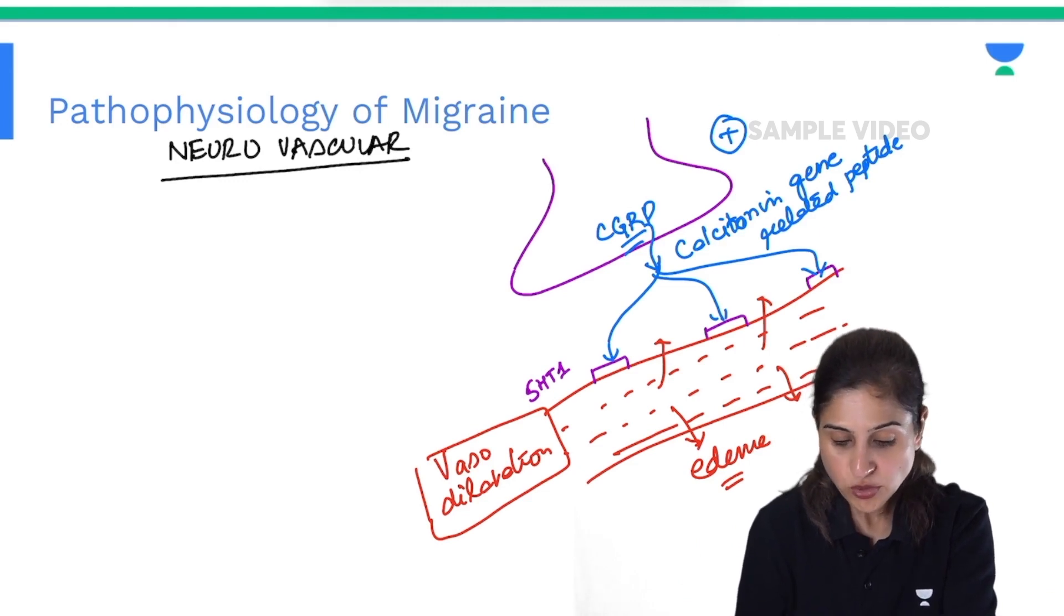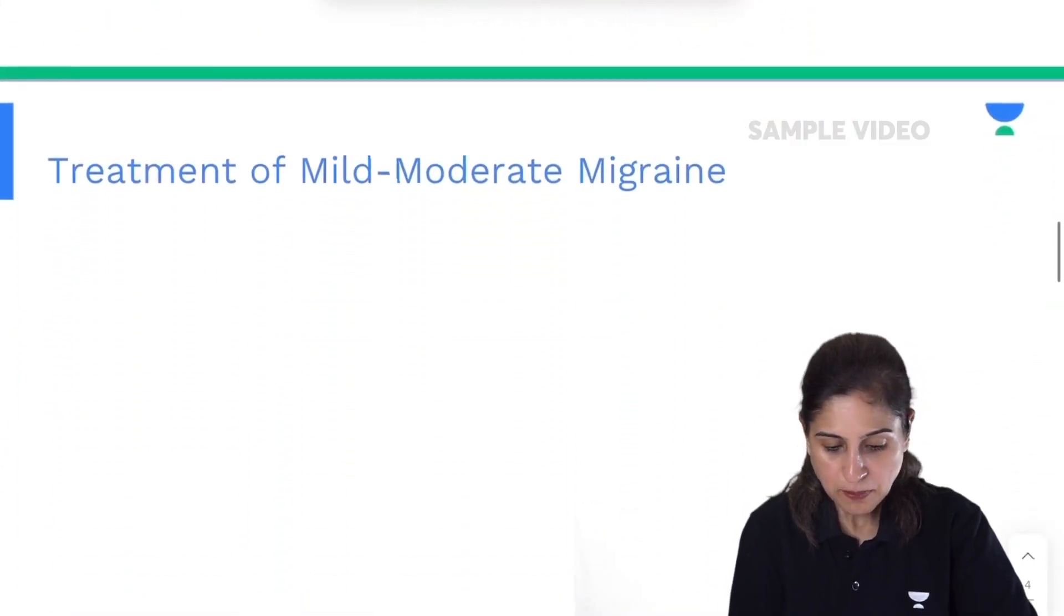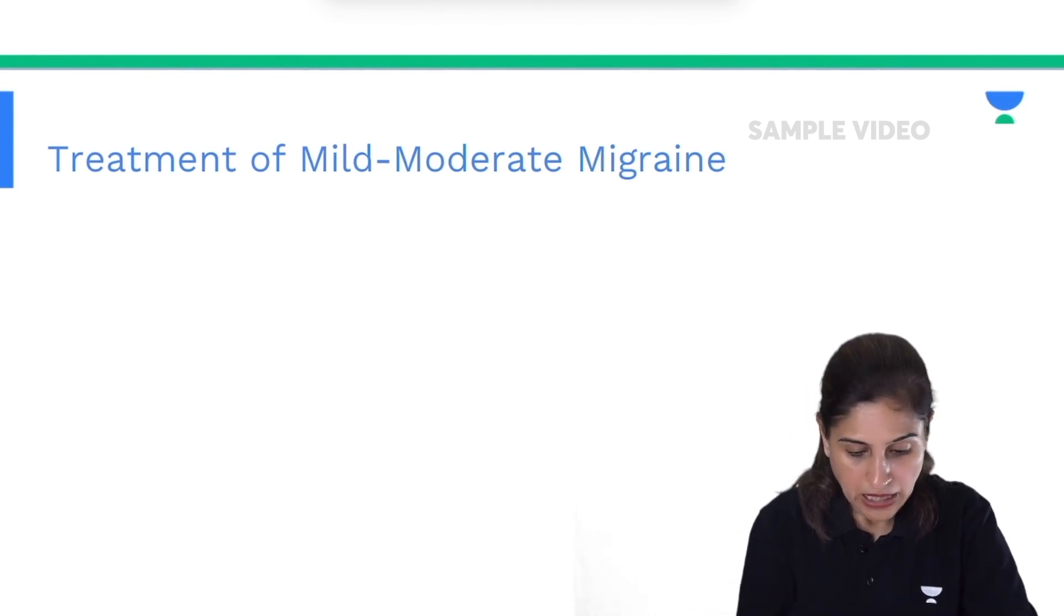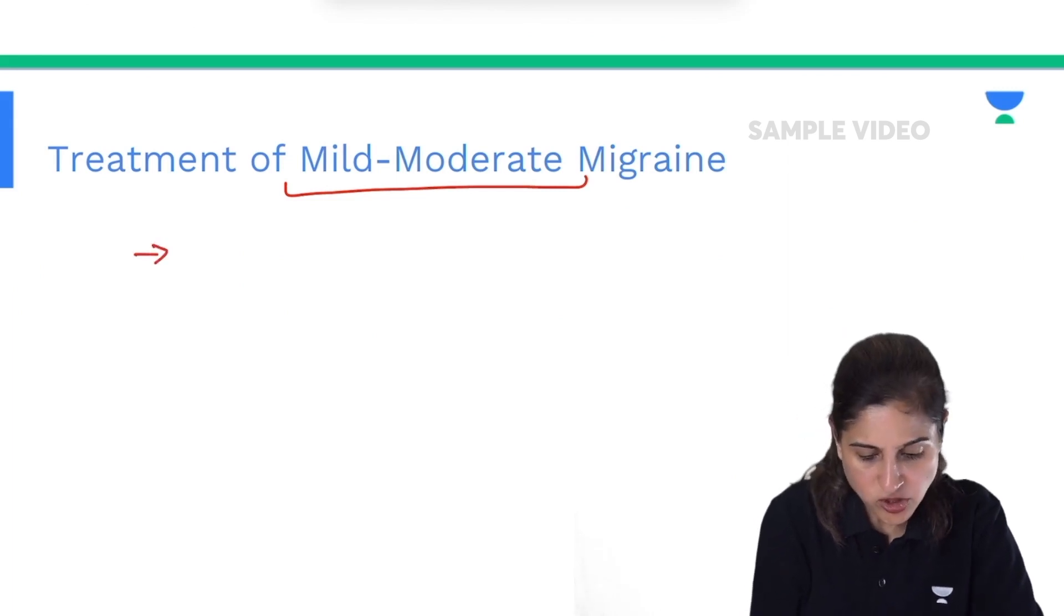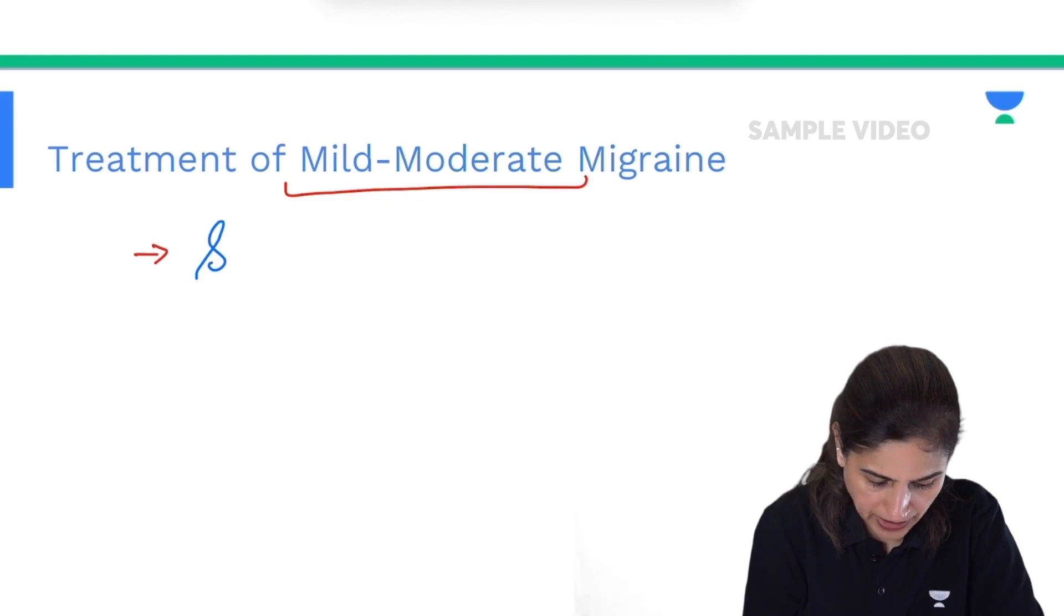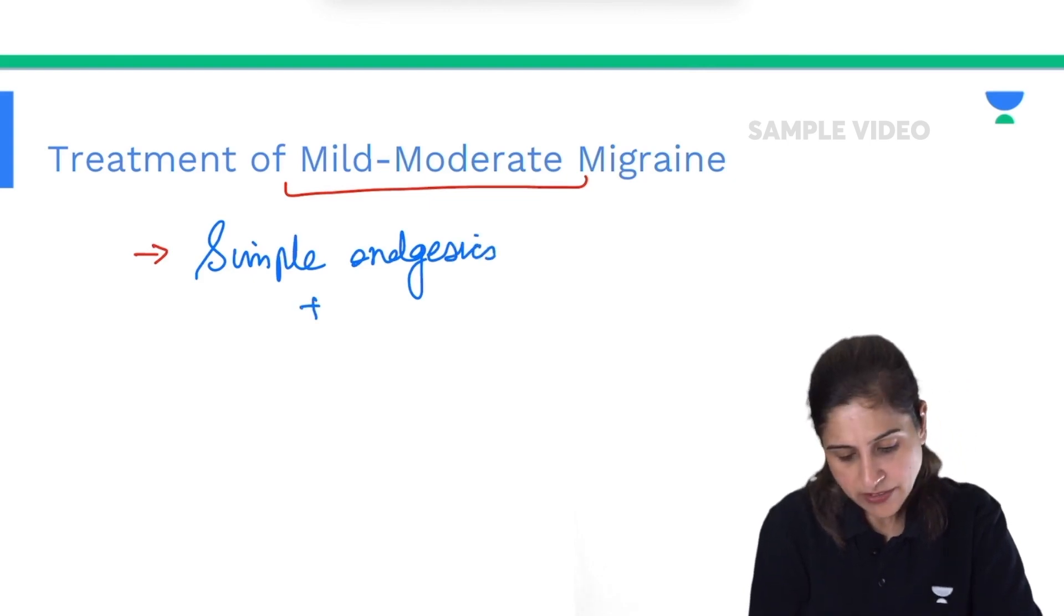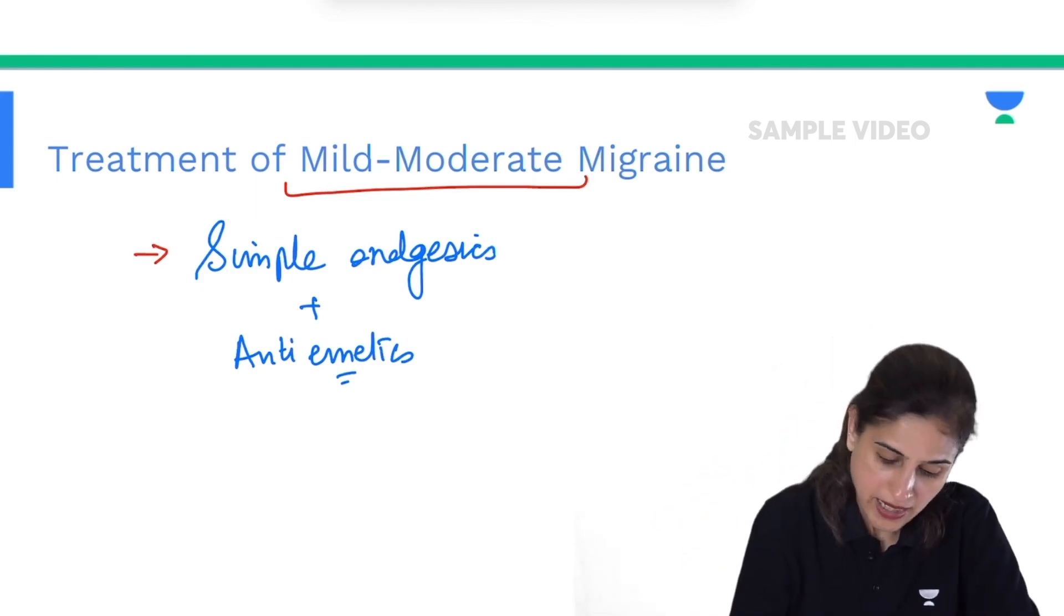Now we'll discuss the drugs which can tackle this. It depends whether the patient is suffering from mild, moderate, or severe attack of migraine. If it is just mild to moderate migraine, we can treat the patient by giving simple analgesics and alongside add anti-emetics, because if there is nausea and vomiting also, you can add anti-emetics along with simple analgesics, your non-steroidal anti-inflammatory drugs.